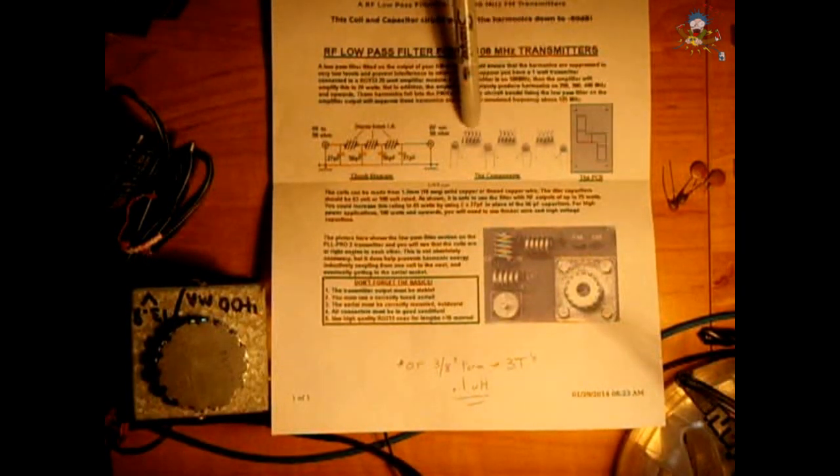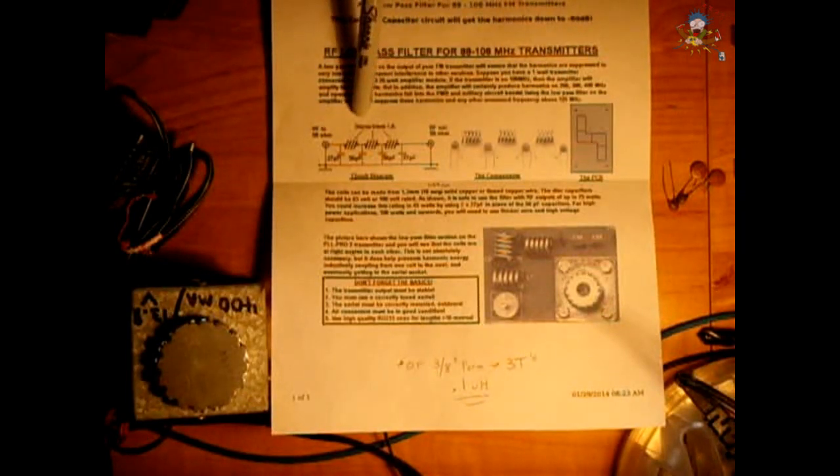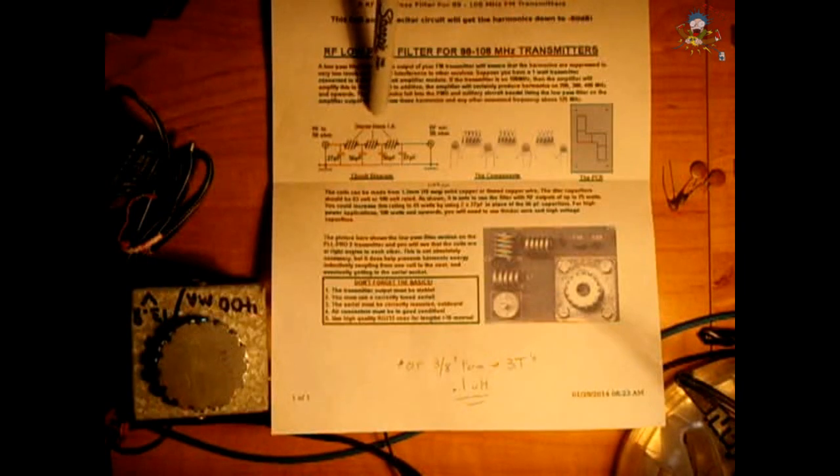Now each one of these coils you see here, these three, is a five turn six millimeter ID. And what that is, you're going to wrap five turns of the 18 gauge solid wire around a form that's roughly six millimeters or a quarter of an inch.